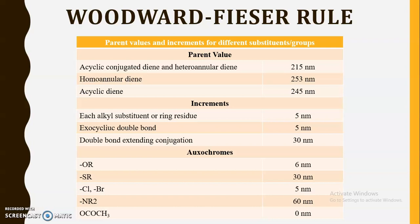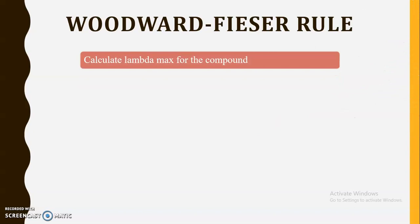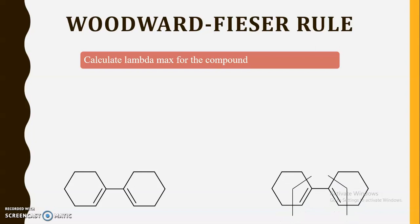Today we are going to discuss some additional examples beyond the one seen in the last video. We have to calculate lambda max for the given compound. In the previous case we calculated lambda max for a homoannular diene. Now for this structure, we first have to check which parent compound it is — whether it is a homoannular diene, a heteroannular diene, or acyclic. By observing the figure we can identify the diene: it starts from this carbon atom, this carbon atom, this carbon atom, and this carbon atom, as marked.